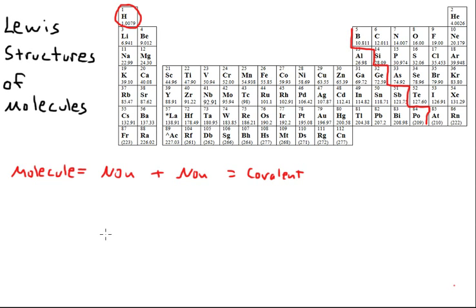Now let's take a look at two different examples of Lewis structures for molecules. First let's take a look at the example of methane. Methane has a chemical formula CH4.